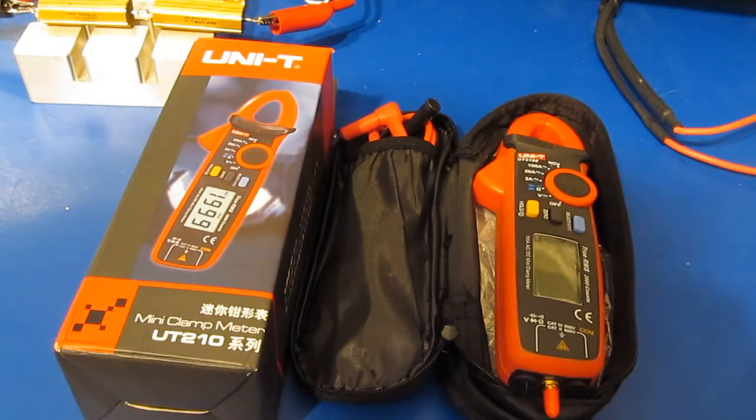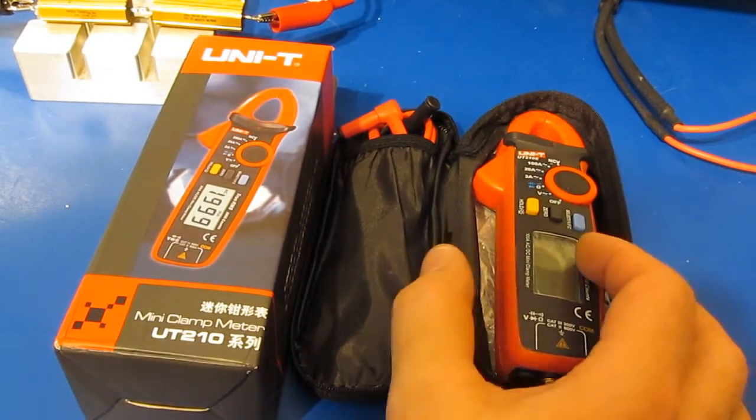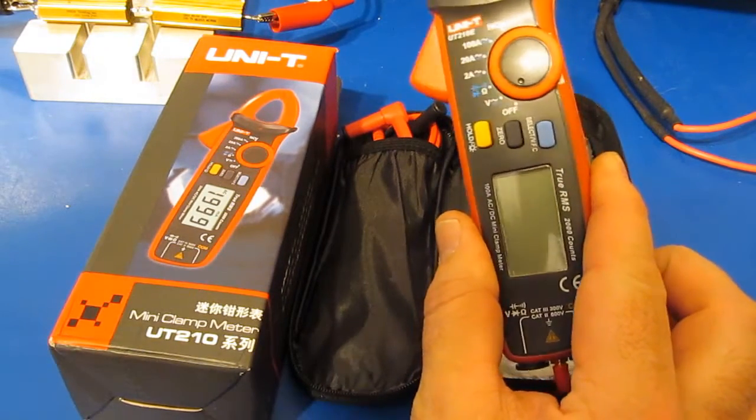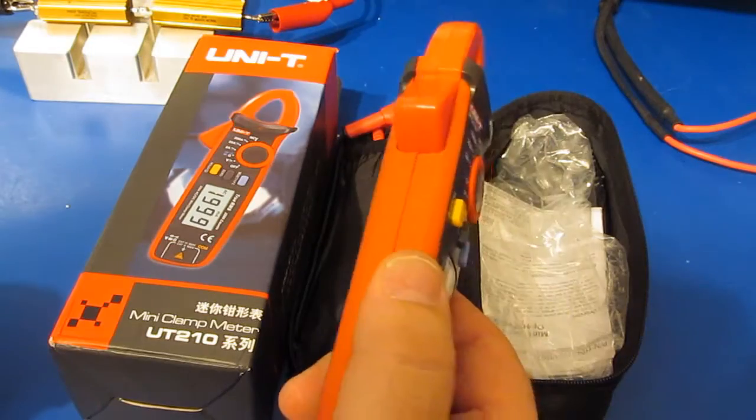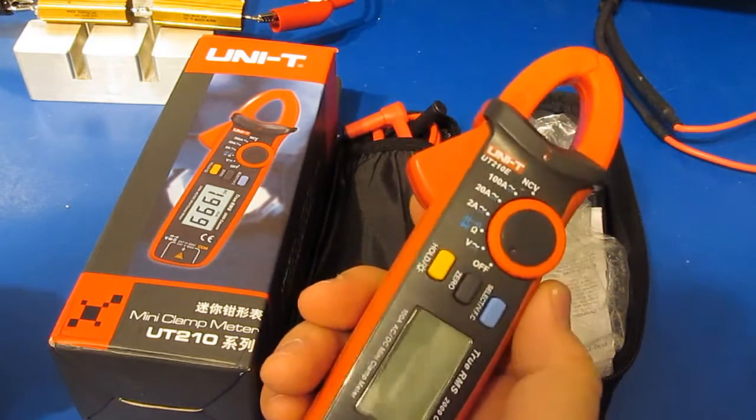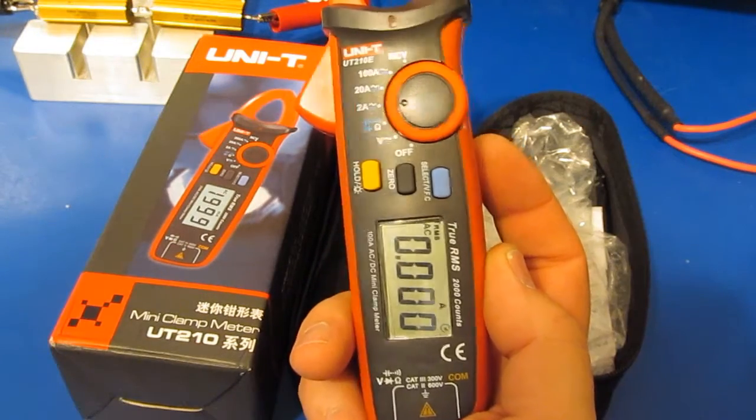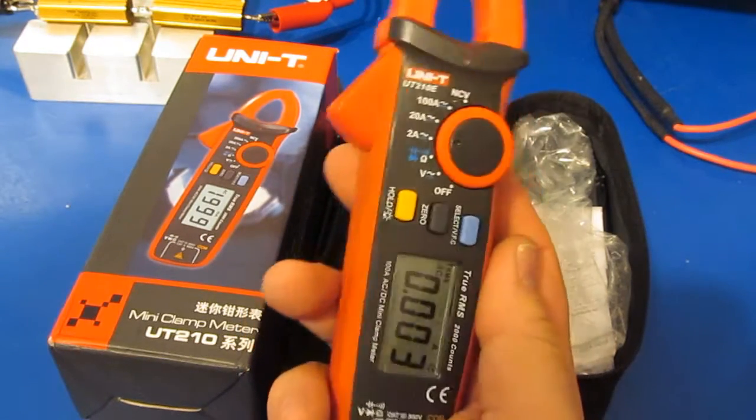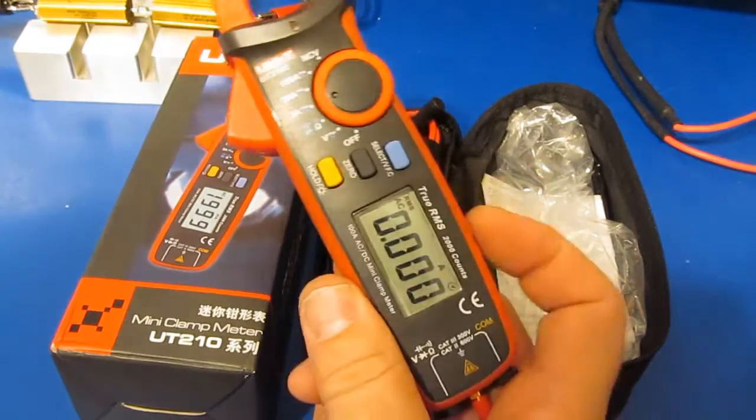Hello again, it's going to be a short video on a clamp meter that I bought recently. This is made by Unity, it's a model UT210E. I originally bought this meter to run on the transient generator and ended up playing around with it. It's actually a very nice clamp meter. This meter is about $40 right now US.